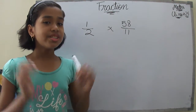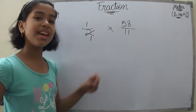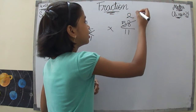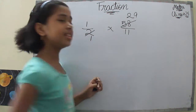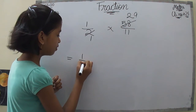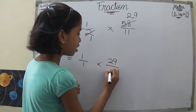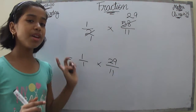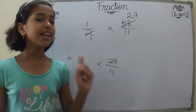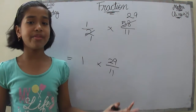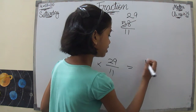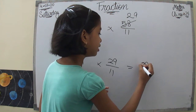So here 2 goes into 2 one time, and 2 goes into 58 to give us 29. Our question becomes 1 upon 1 into 29 upon 11. Since 1 upon 1 equals 1, and anything multiplied by 1 is itself, the answer of this question is 29 upon 11.